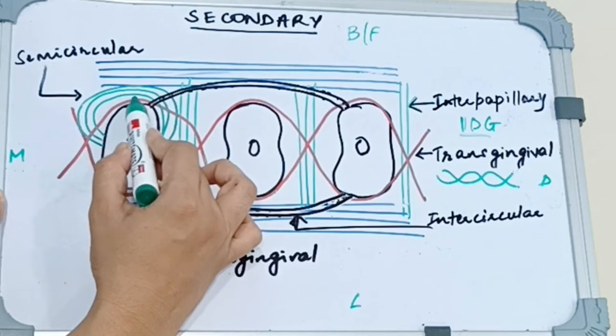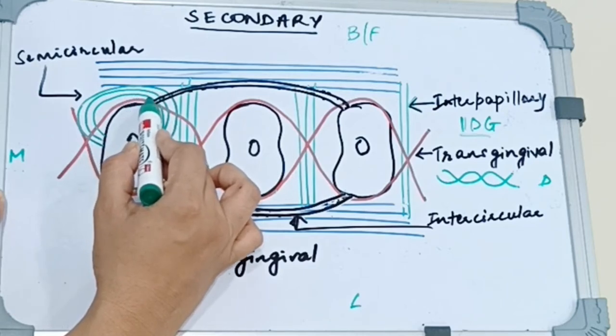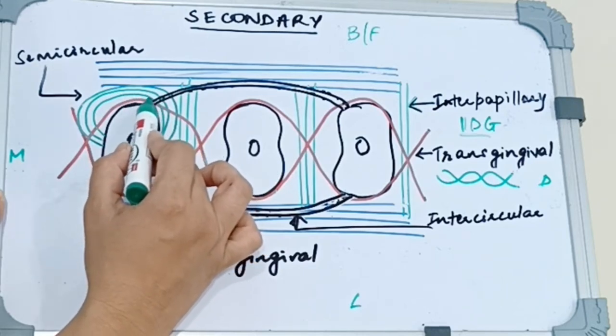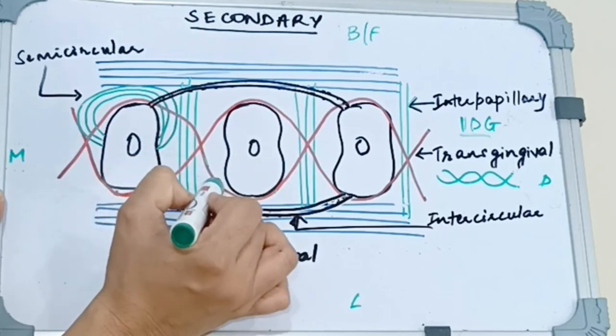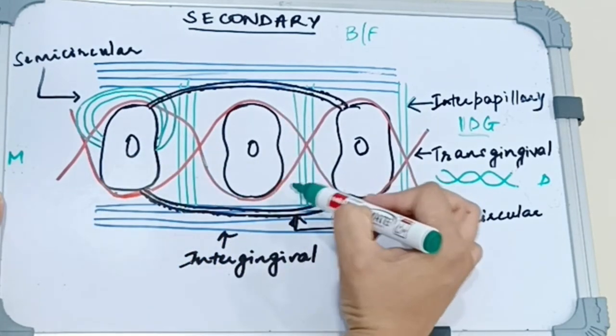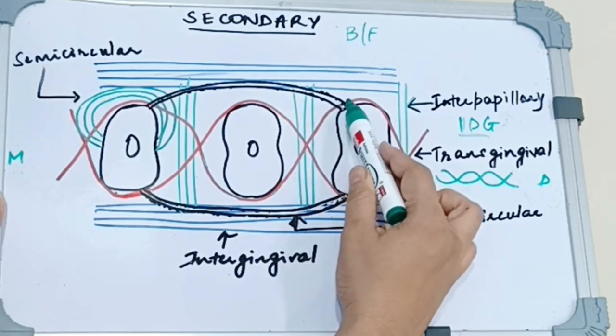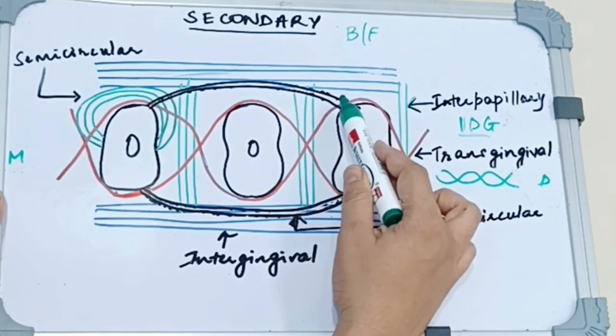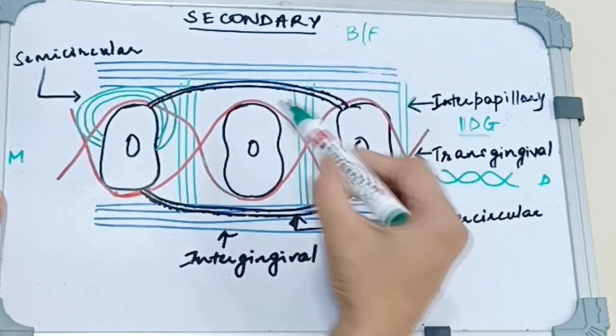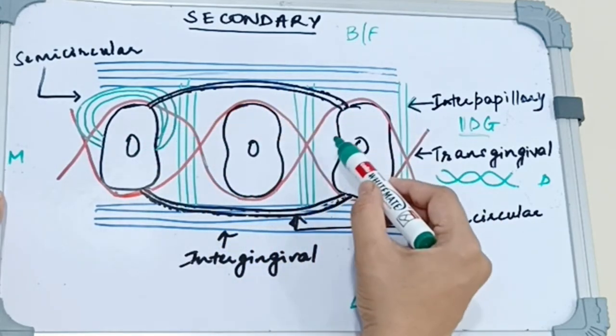So these fibers start from the distal surface, traverse the interdental space, go around lingually and then again come to the interdental space of the other two teeth and insert on the mesial surface. So what these fibers do is they secure the alignment of these teeth with the arch.